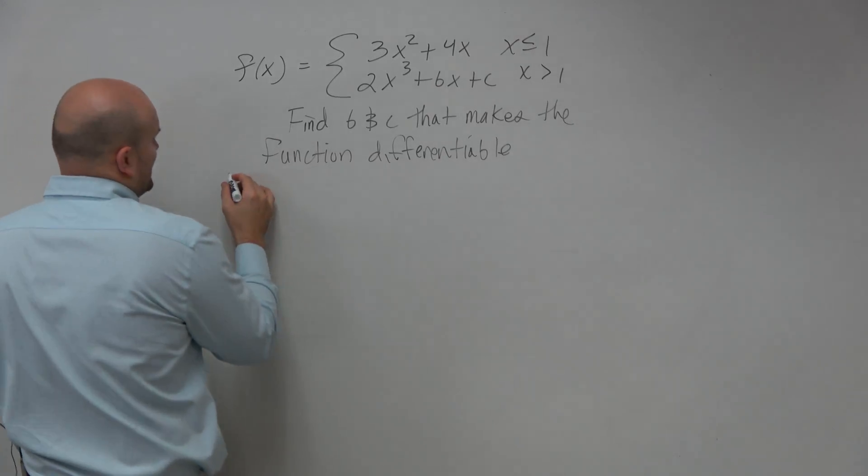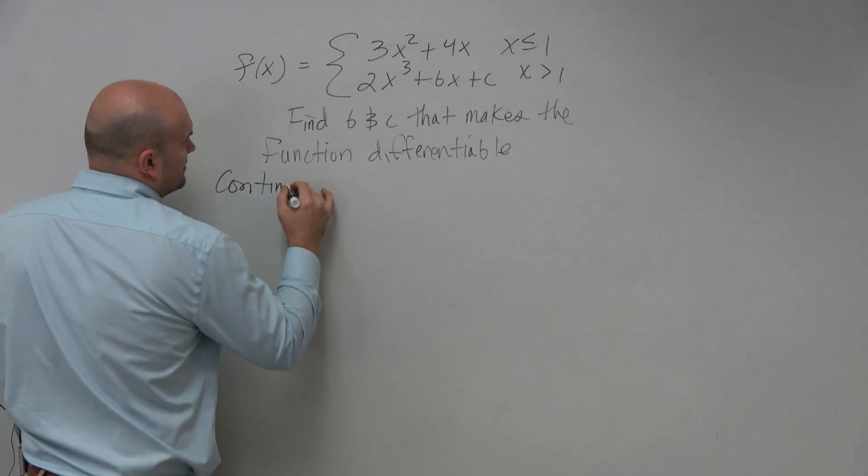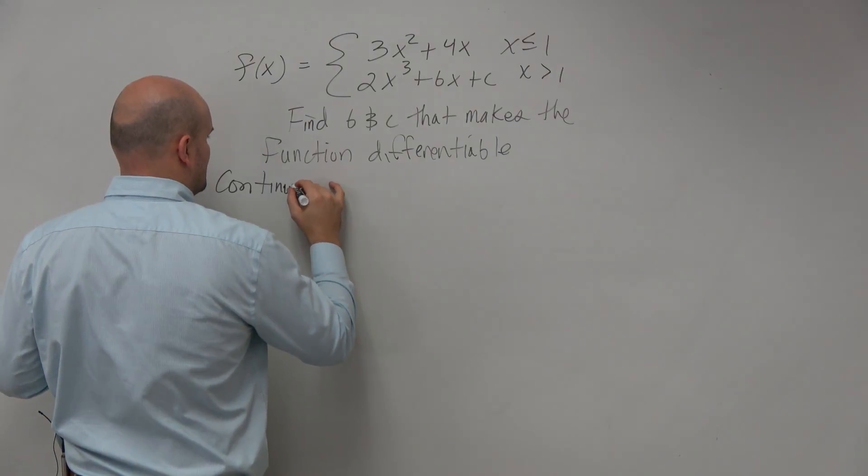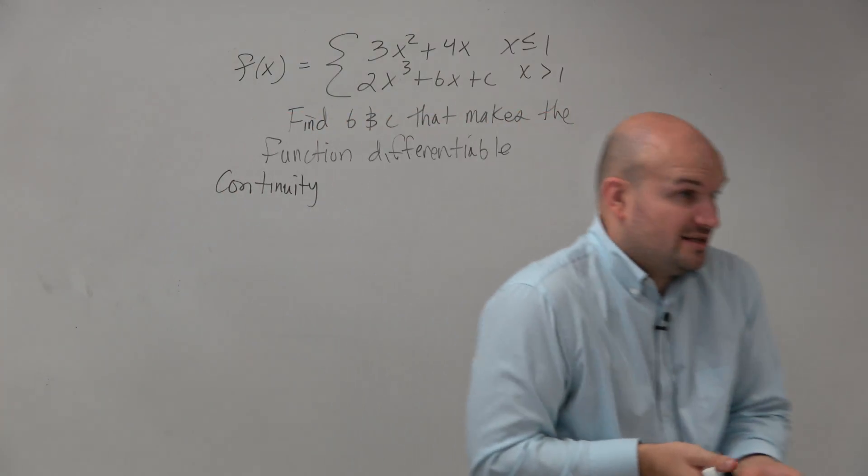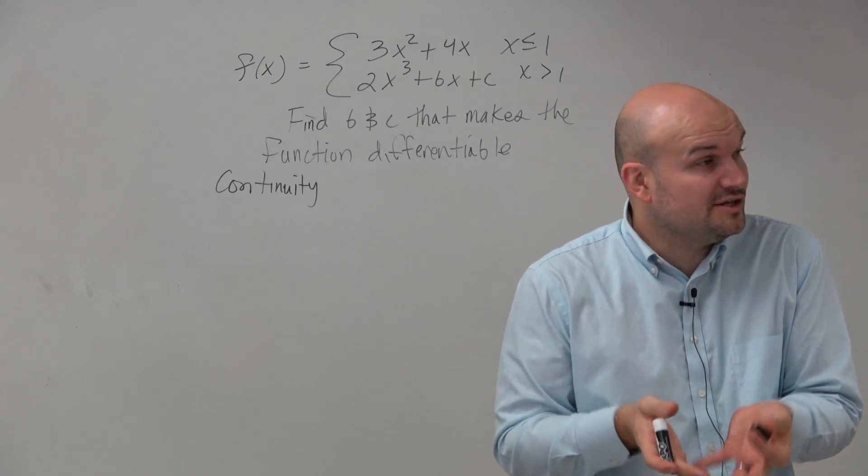Let's go ahead and take a look. First thing, continuity. Right? So we're going to check to find the values that are making a and b continuous.